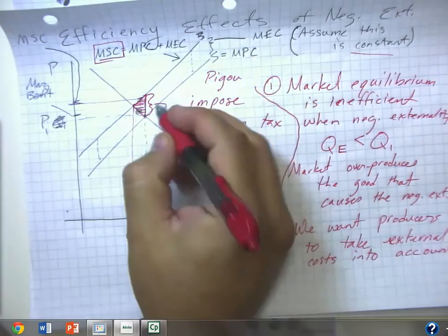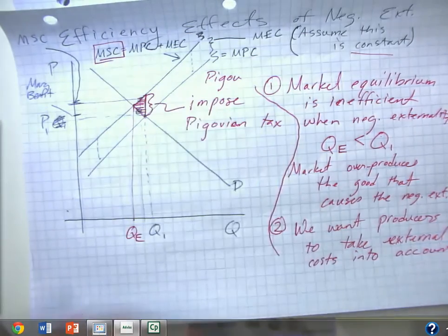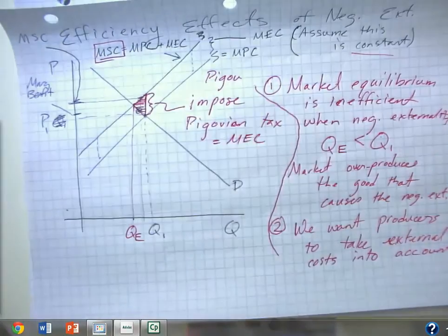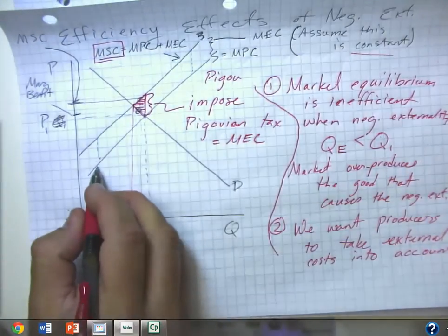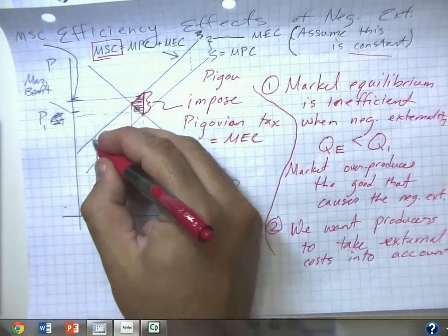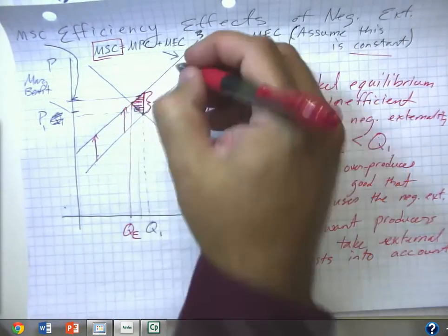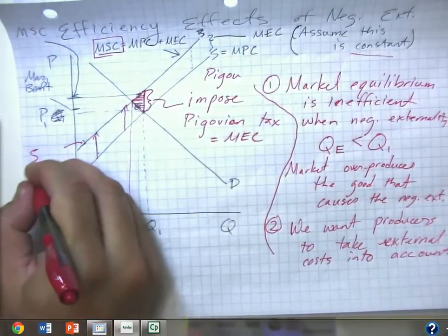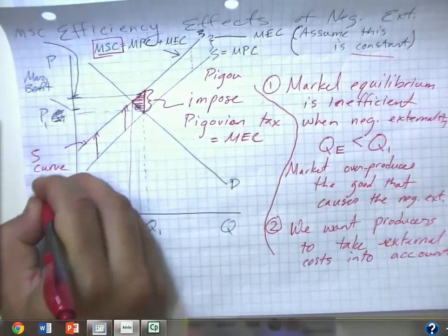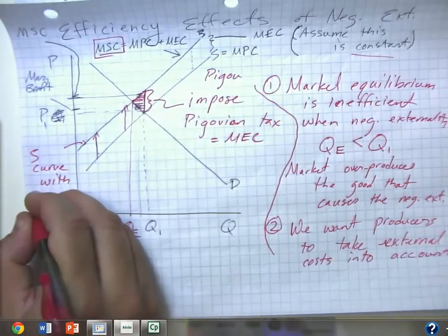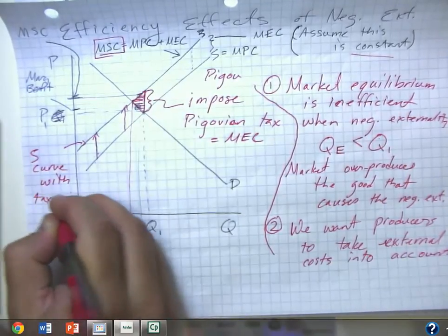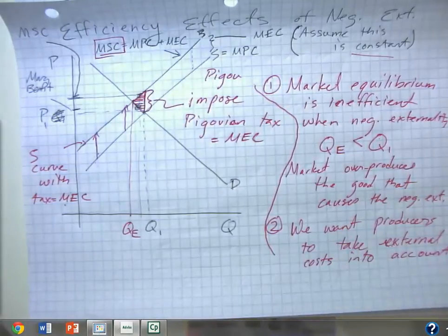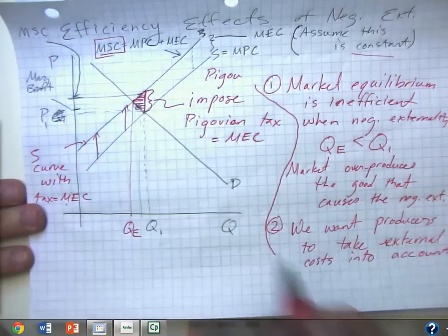So the Pigovian tax, if the tax is equal to the marginal external cost, then we raise each seller's costs by the amount of the tax, and this over here is our supply curve with tax equal to our marginal external cost. So we're able to get to our efficient outcome.